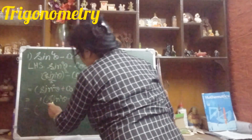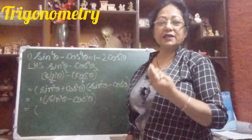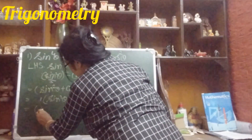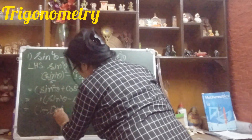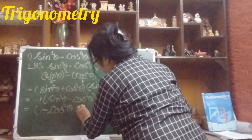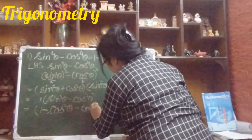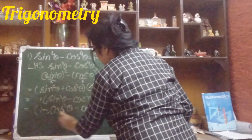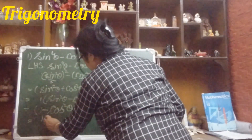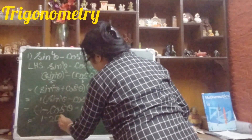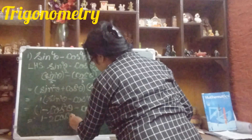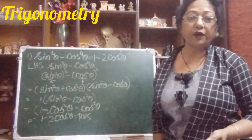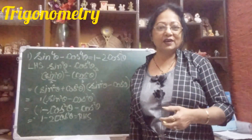So we write sin²θ minus cos²θ. The identity says sin²θ equals 1 minus cos²θ. So in place of sin²θ we write 1 minus cos²θ, and we still have minus cos²θ. So our result becomes 1 minus cos²θ minus cos²θ, which equals 1 minus 2cos²θ. This is our right hand side. Hence proved — left hand side equals right hand side.